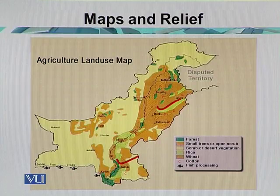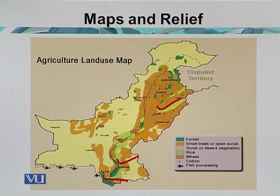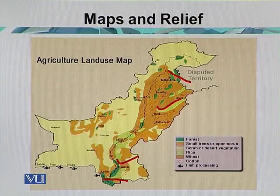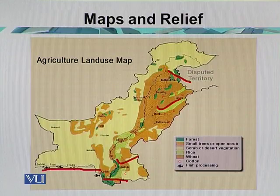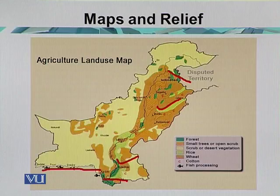The green color on the map shows forest areas of the country, mostly to the north, with some coverage in the south. These are areas of natural vegetation or forest. The south of Pakistan is covered with another economic activity — fish processing areas, where most harbors or natural seaports are located. This illustrates the economic importance of the country's map.